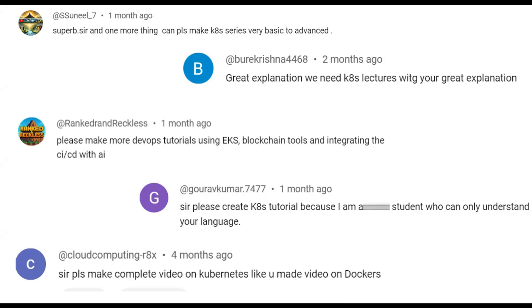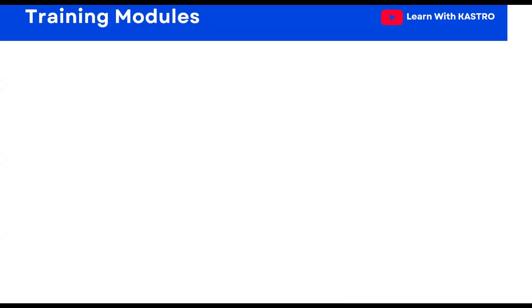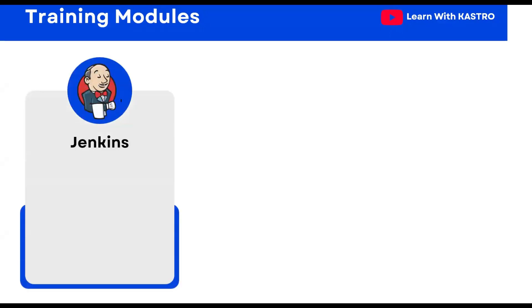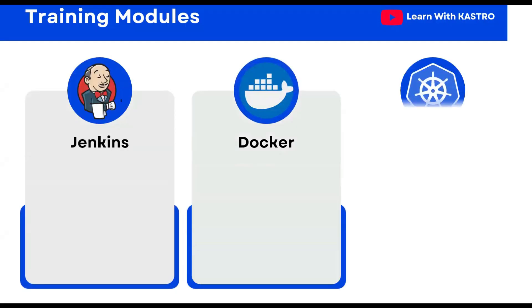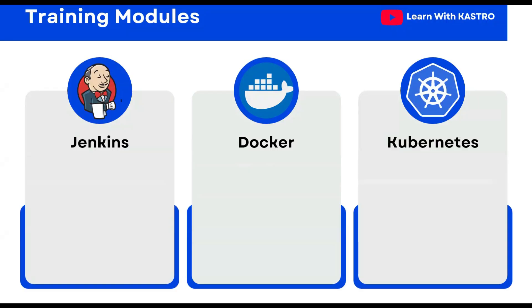I will bring you a structured and hands-on training experience which will help you accelerate your DevOps journey. This course will majorly consist of three different modules: the first one is Jenkins, the second one is Docker, and the third one is Kubernetes — right from the basics to the advanced levels, using theory and practical real-world projects. This training will cover majorly anything that is required to become a DevOps engineer.